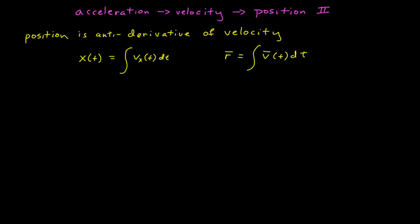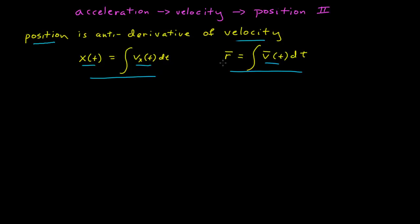In the last module, we took a look at how to get position from velocity using the antiderivative. We learned that from our fundamental definition, the position is the antiderivative of the velocity. Here is how we represent that in one dimension, and here is the vector representation of the notation for the antiderivative. We can use that, if we know the velocity function in one dimension or as a vector, to get the position function.